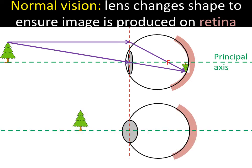What happens if we look at an image that's a bit closer? Well, the lens changes shape. The focal point comes much closer to the lens so that the image is again produced on the retina — we have to move the focal point towards the lens. To do that, the curvature of the lens has to increase, and we do that using the ciliary muscles.